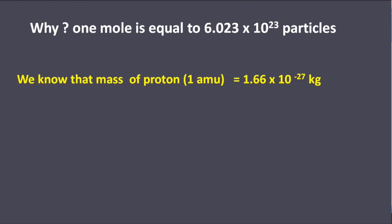We know that mass of a proton is 1 amu, which is equal to 1.66 into 10 to the power minus 27 kilogram, which is equal to 1.66 into 10 to the power minus 24 gram.